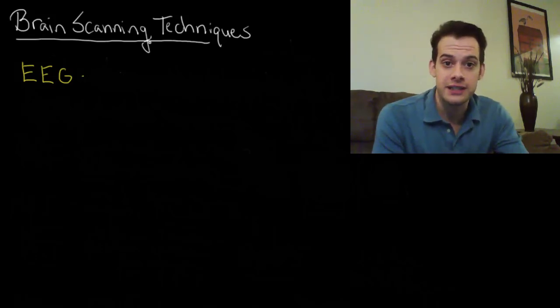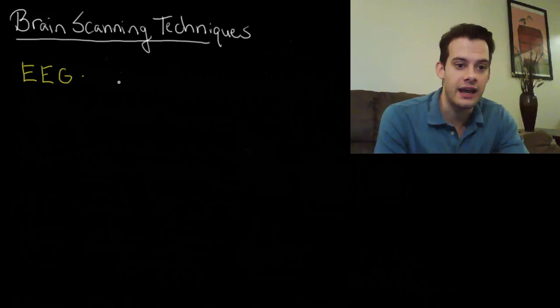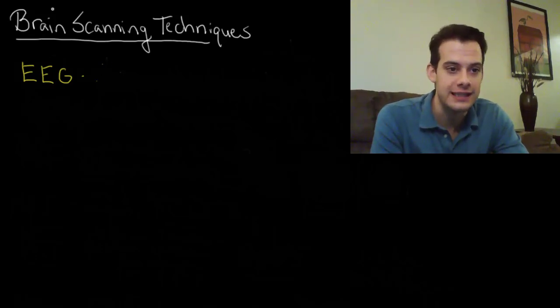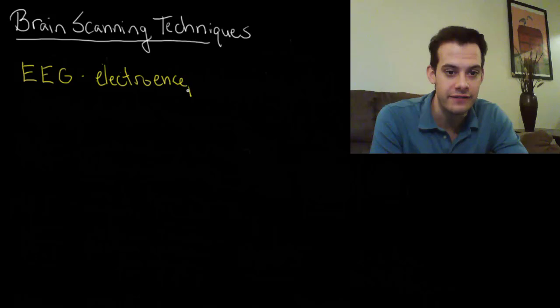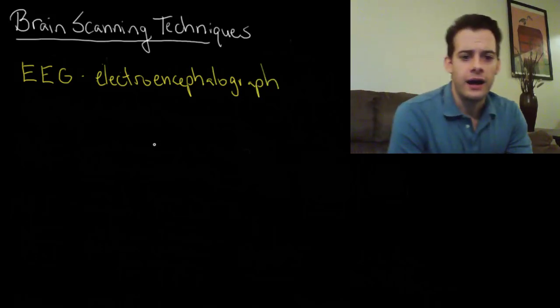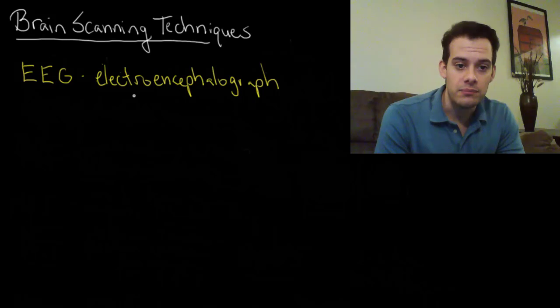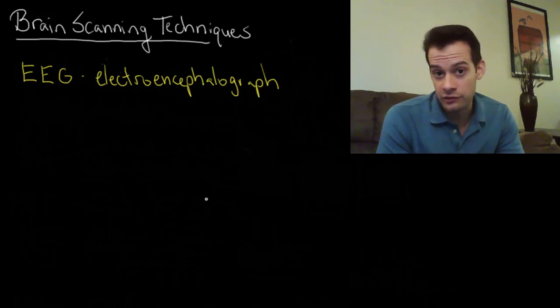This is actually one of the first scanning technologies and stands for electroencephalograph. So the electro refers to electricity, encephalo means related to the brain, and then we're going to be creating a graph of these results. The electroencephalograph looks at levels of electrical activity in the brain and graphs them.